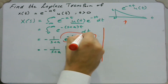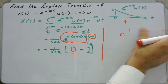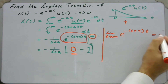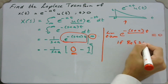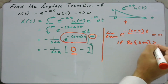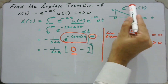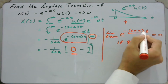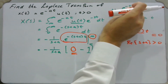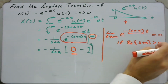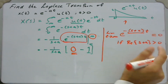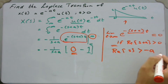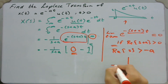We know that the function e^(-(s+a)t) as t tends to infinity is only 0 if the real part of (s+a) is greater than 0. Since a is real and greater than 0, it is already converging. So the argument of the exponential, s+a, must satisfy Re(s+a) > 0, which means the real part of s in the complex plane must be greater than minus a.